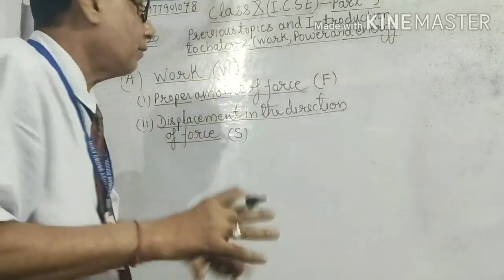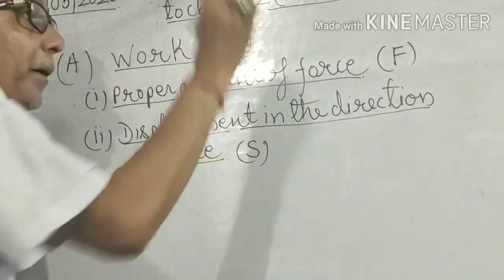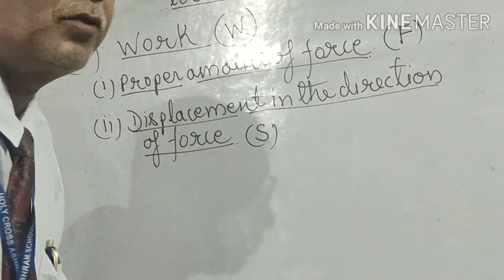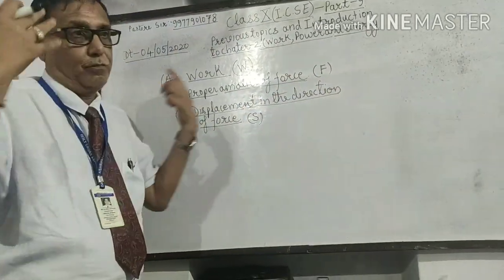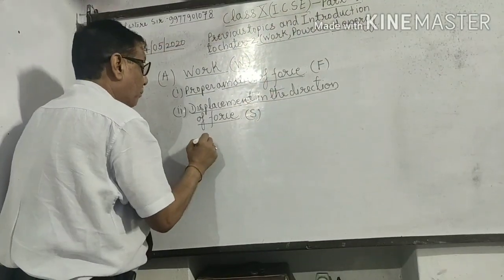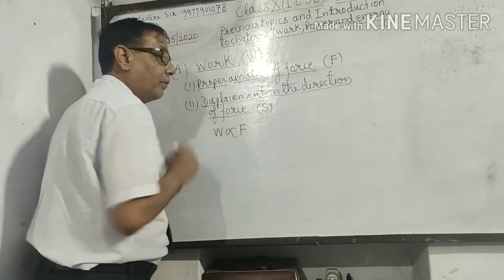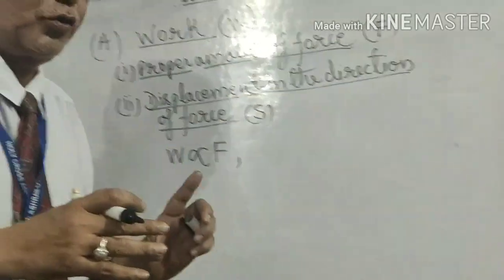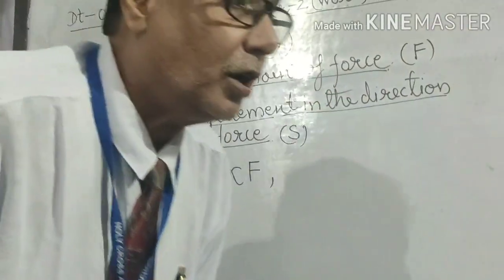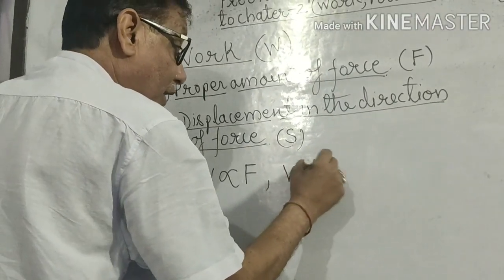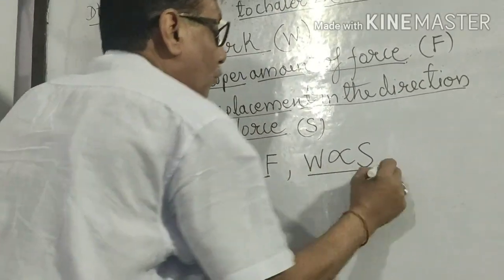How to make the formula? For that, you should know that this work depends on how many factors — these are the two factors. How does that work depend on these two factors? It is very simple. If you will apply more force on the body, more work will be done. So that means that is called a directly proportional relationship — meaning you can write W is directly proportional to force. And if the displacement is more, the distance covered in a particular direction will also be more — meaning W is again directly proportional to S.